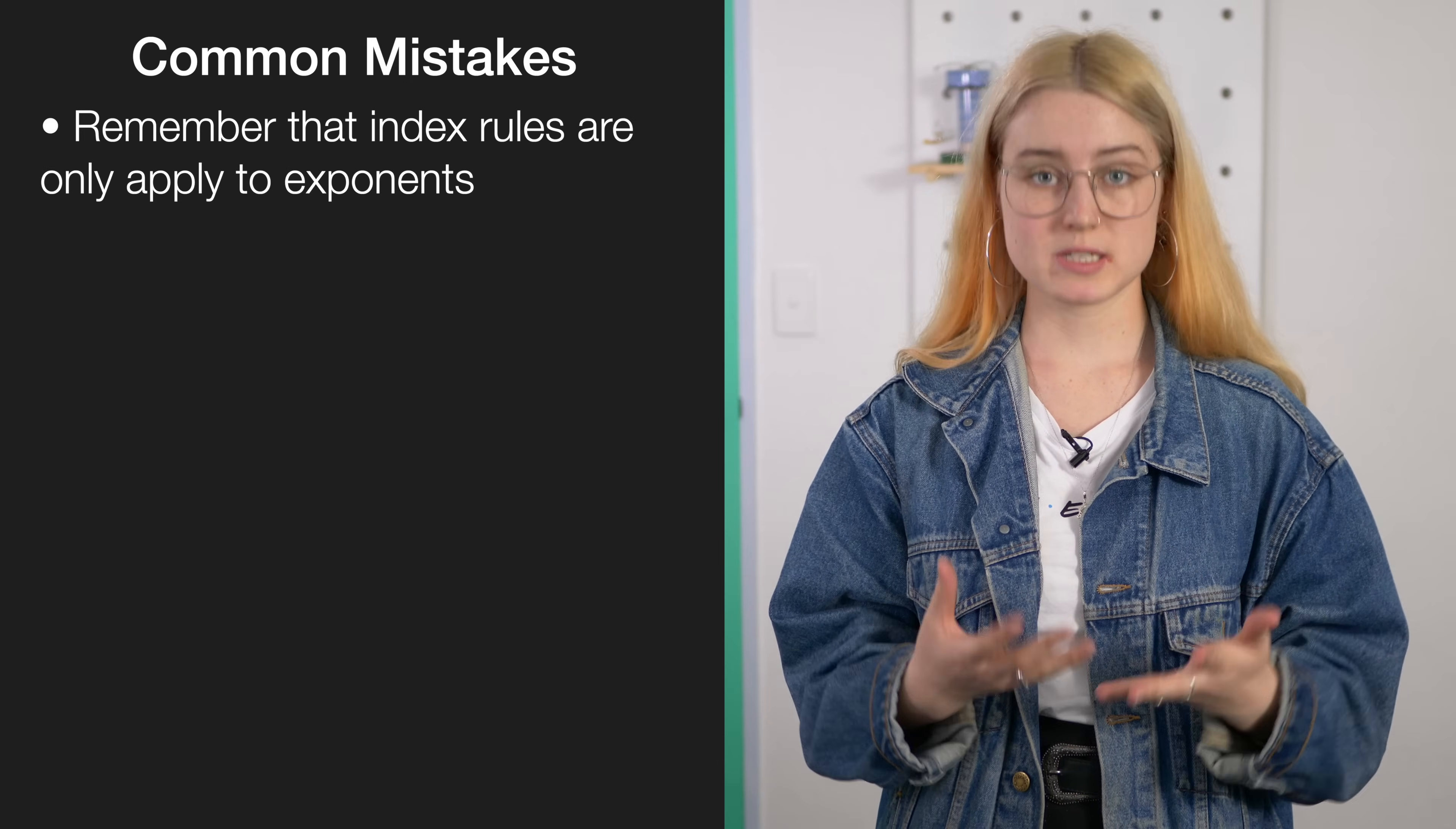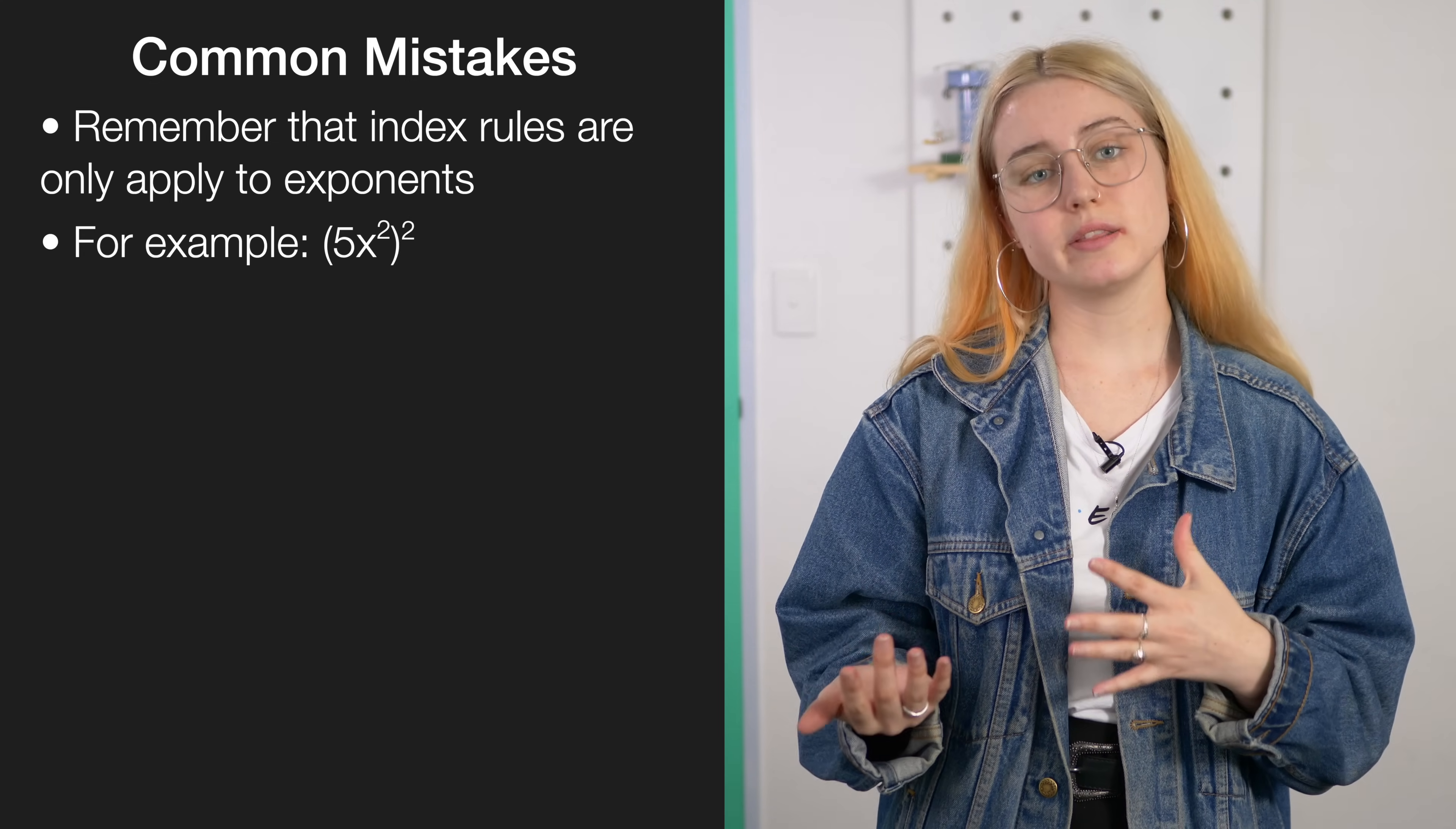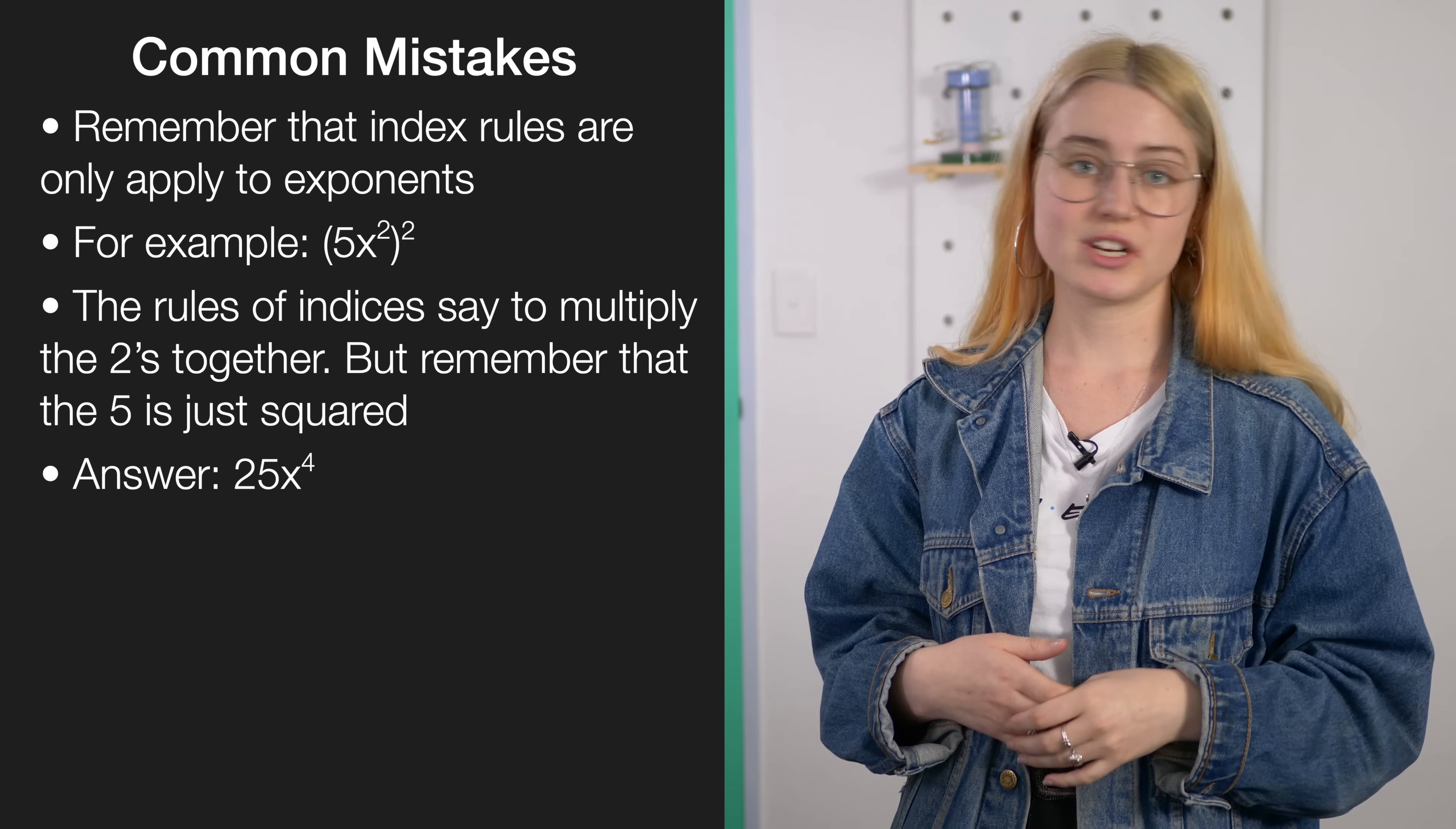When dealing with indices, remember that our index rules are only applied to exponents. Regular numbers, or coefficients of variables, we deal with in the exact same way that we've always been taught to. For example, in this problem, our index rules tell us to times our twos together, but five is squared, so we should really answer the question like this.